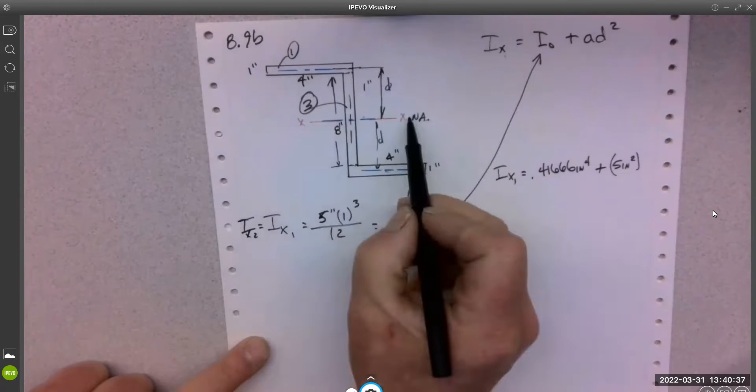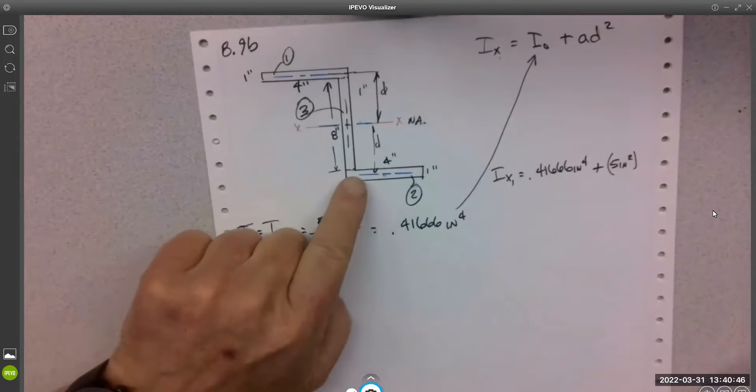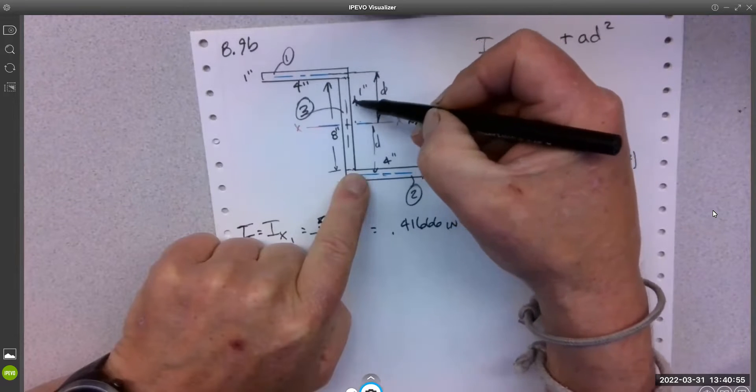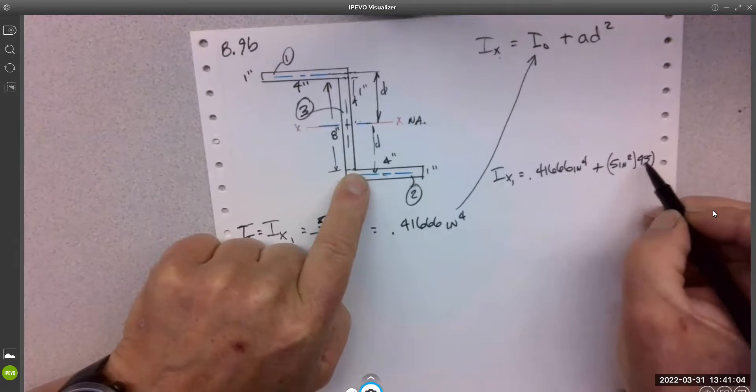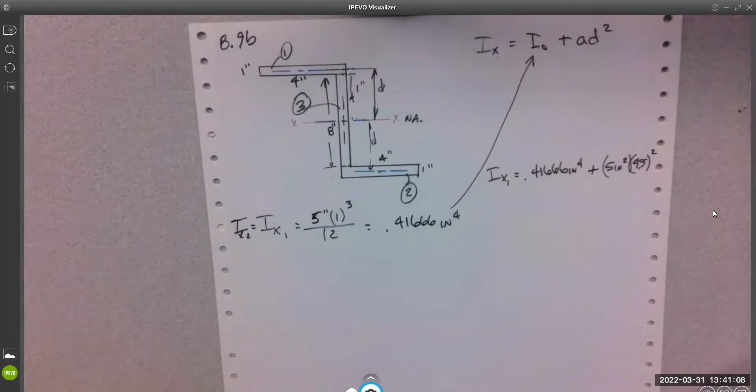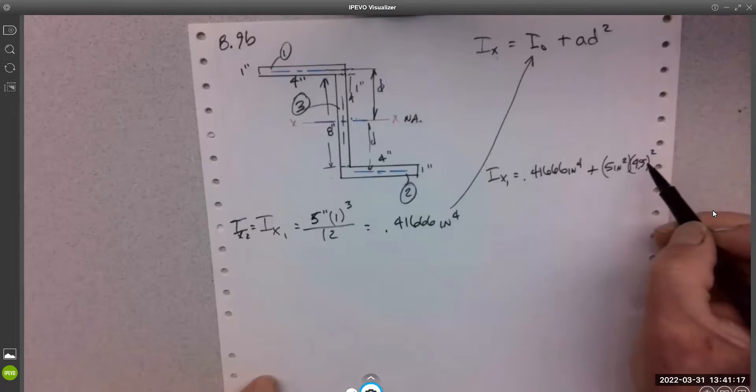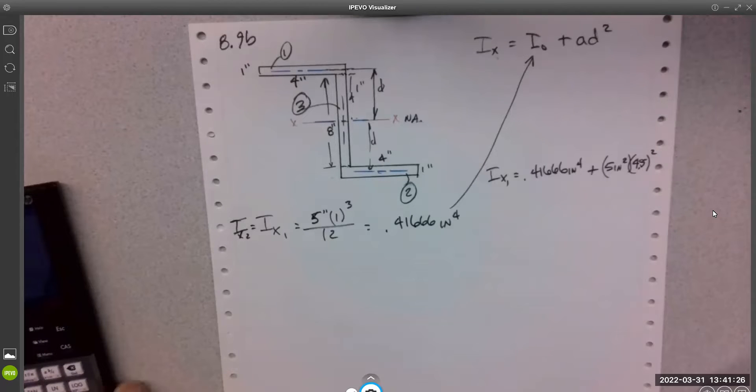So how far is that? Careful. It's eight from here to here, right? So half of that is four, and then another half. Four to here, and then a half. Four and a half. And that gets squared. And that's the part that we tend to forget. Don't forget to square your d distance. Four and a half. All right, run this number.